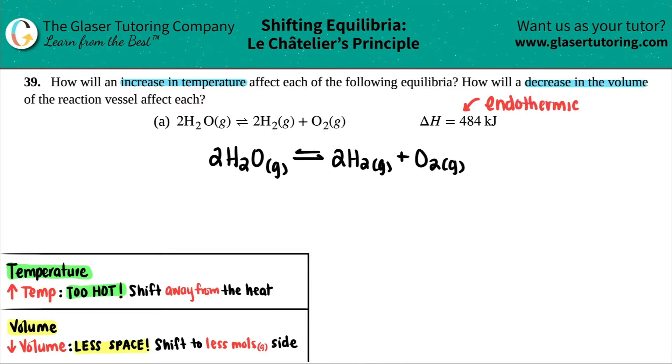That means that this is endothermic. And remember, when we did delta H questions in the chapter sometime before this, endothermic means that you absorb heat. In other words, an endothermic reaction will have the heat on the reactant side. So I'm going to say plus heat, and maybe I'll just highlight it.